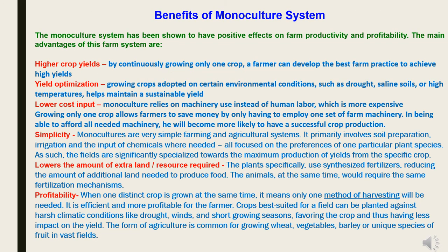Benefits of the Monoculture System: The monoculture system has been shown to have positive effects on farm productivity and profitability. The main advantages include higher crop yields — by continuously growing only one crop, a farmer can develop the best farm practices to achieve high yields. Yield optimization involves growing crops adapted to certain environmental conditions such as drought, saline soils, or high temperatures to maintain sustainable yield. Lower cost input is achieved because monoculture relies on machinery instead of human labor; growing only one crop allows farmers to save money by employing one set of farm machinery, making successful crop production more likely.